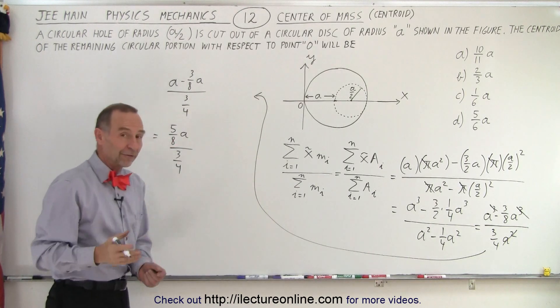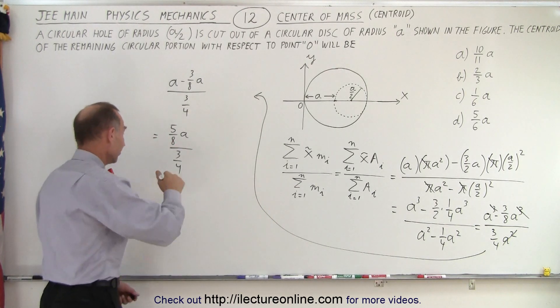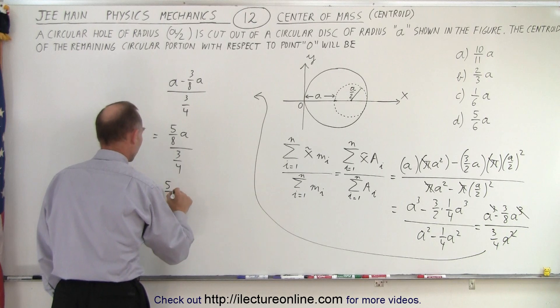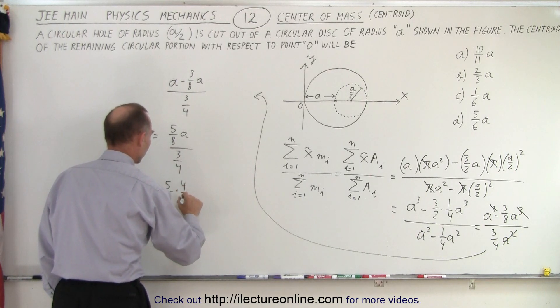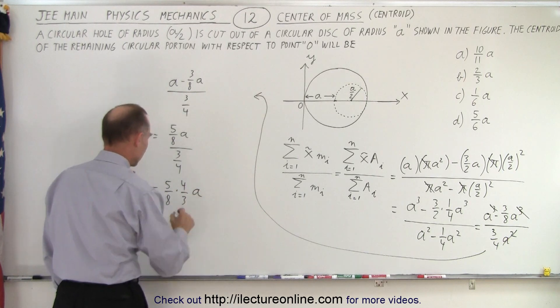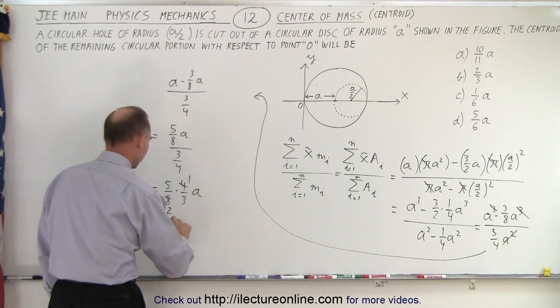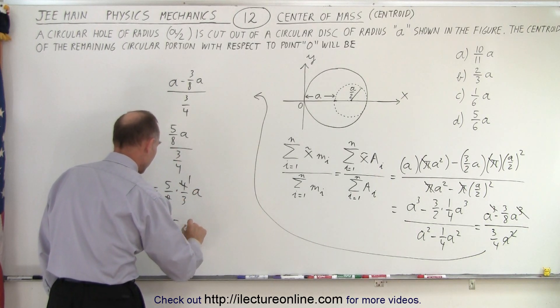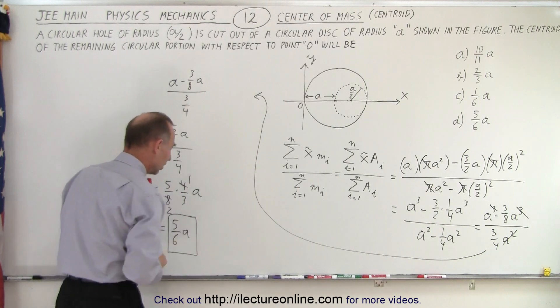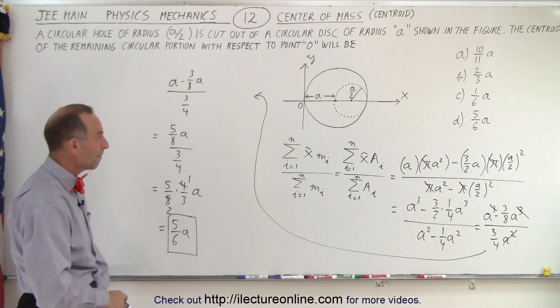So now we have a fraction divided by a fraction, which is the same as multiplying by its inverse. So this is equal to five over eight times four over three a. So now we end up with five over six a, as the centroid of the disk with the hole missing.